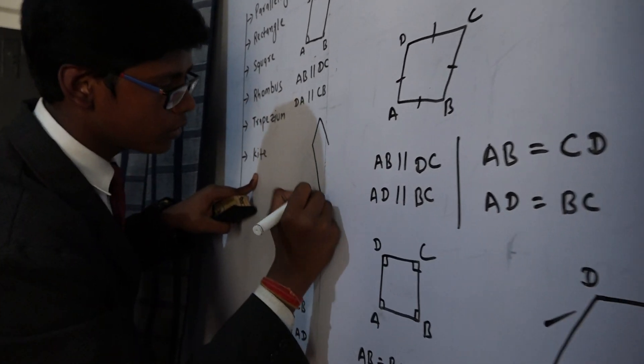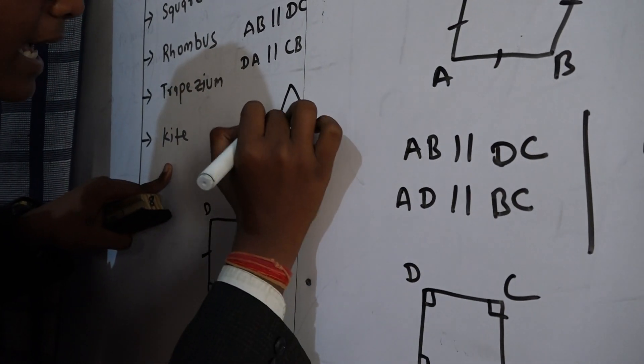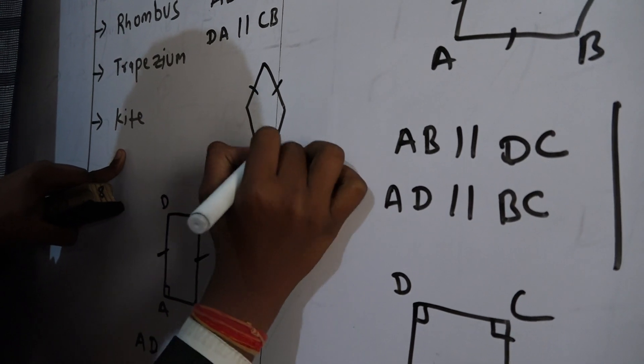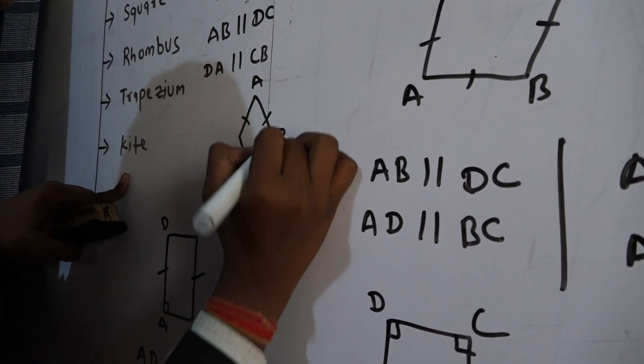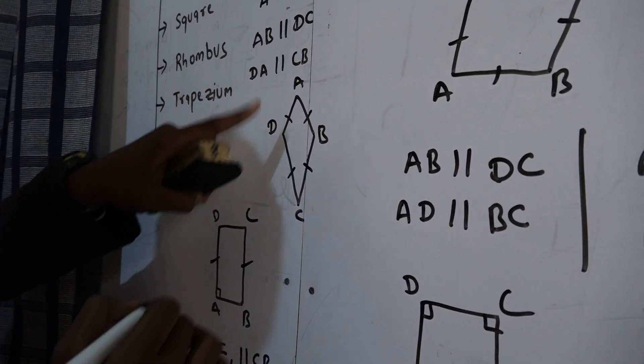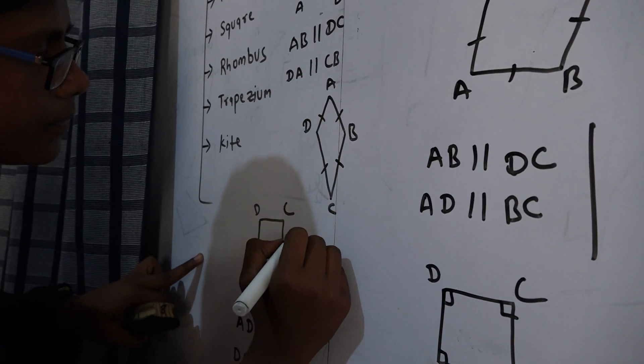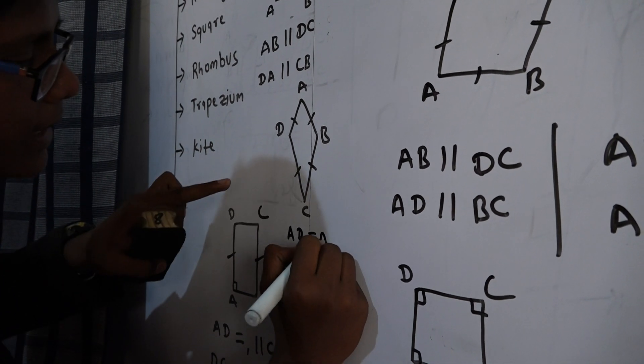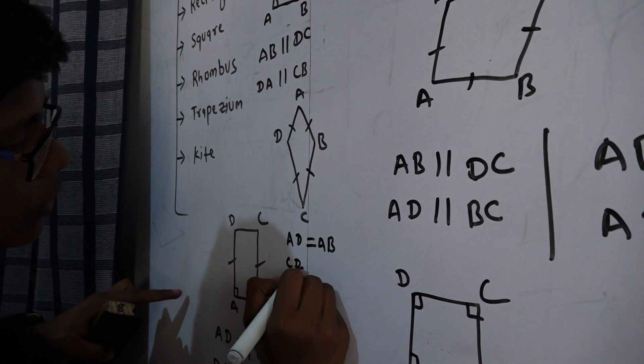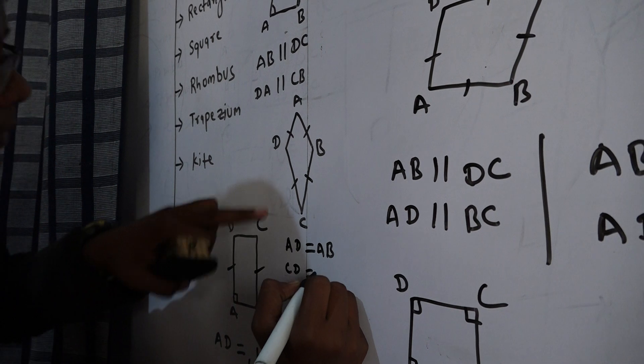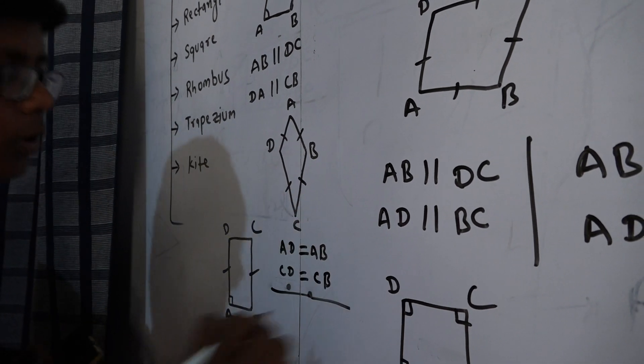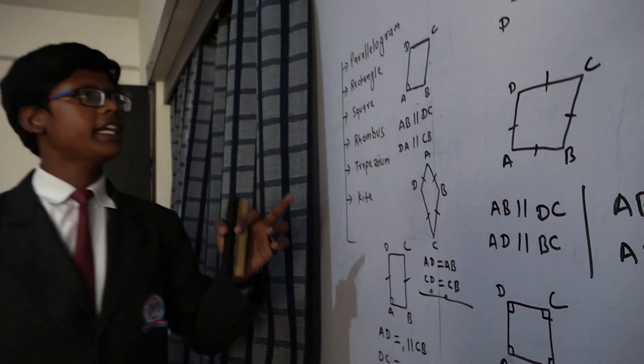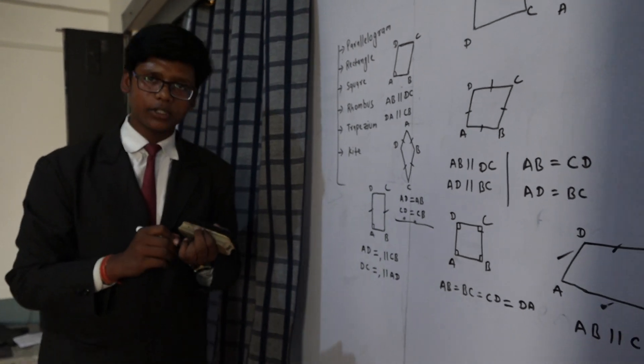It is also a four-sided bounded figure having two equal opposite sides. Then we can write that AD equal to AB and CD equal to CB. So this explanation makes you understand about the quadrilateral. Thanks for this video.